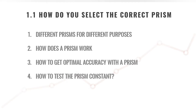The first aspect is the different prisms for different purposes — each survey task has a specific prism you can use. Number two, how does a prism work? Number three, how to get optimal accuracy with a prism? And number four, how to test the prism constant? We'll look at those four points a bit deeper.